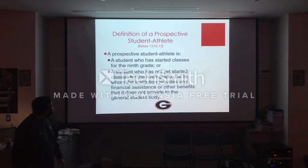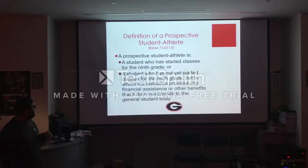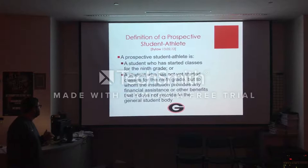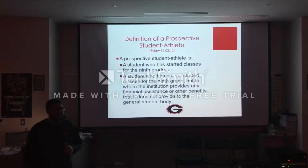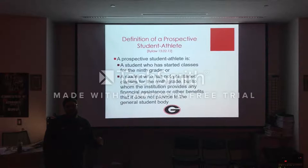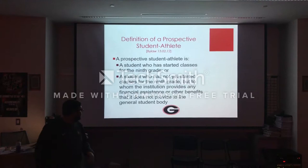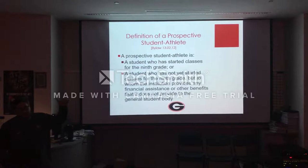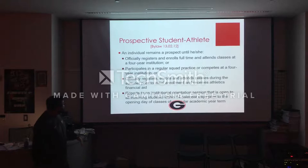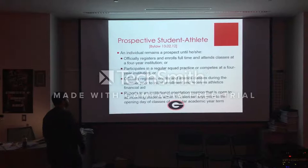What is the definition of a prospective student-athlete? A student who has begun classes in the ninth grade, or a student who has not yet started classes for the ninth grade but to whom the institution provides financial assistance or other benefits that it does not provide to the general student body. I can remember a few years ago when I was coaching junior college ball — there's a kid that's actually at Alabama now, Dylan Moses. He was an eighth grader and Alabama actually offered him, so at that point he became a recruited player. You don't see that a whole lot, but it's becoming more and more common. USC offered a kid who was a seventh grade quarterback, who ended up playing receiver — I believe his name's David Sills, now at West Virginia.